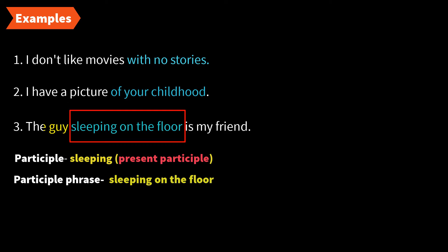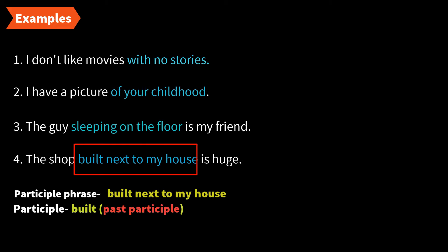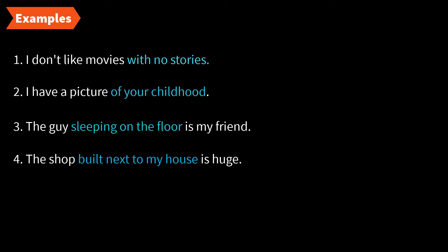'Sleeping on the floor' is an adjective phrase starting with the present participle 'sleeping,' working as an adjective. Another example: 'The shop built next to my house is huge.' Here, 'built next to my house' is the adjective phrase starting with the past participle 'built.' It is a participle phrase working as an adjective, giving information about the noun 'shop.' Which shop? The shop built next to my house.